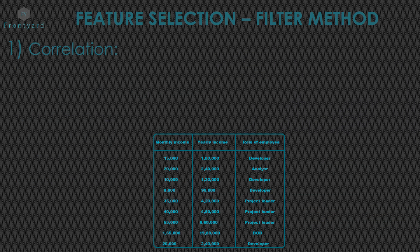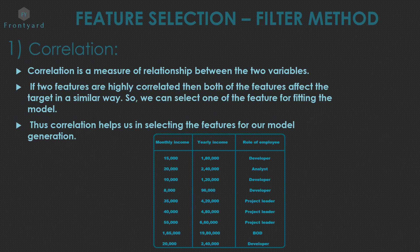First is correlation. Correlation is a measure of relationship between two variables. For example, see the table. If the income of the person is very high, then the person's designation in a company also will be high. That is, there is a relationship here, right? Like salary increases, designation also increases. This is the correlation between these two variables.